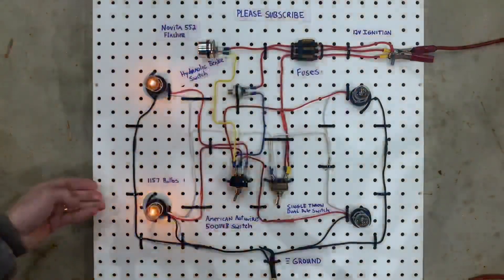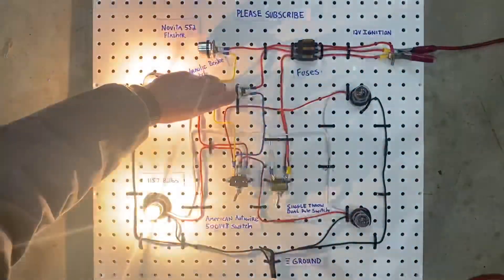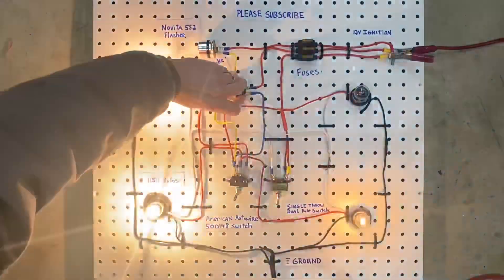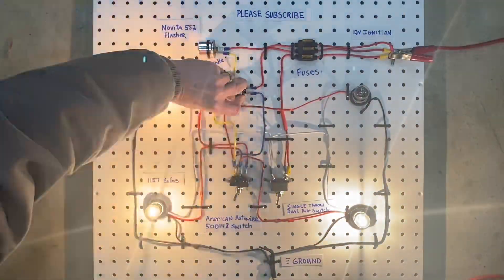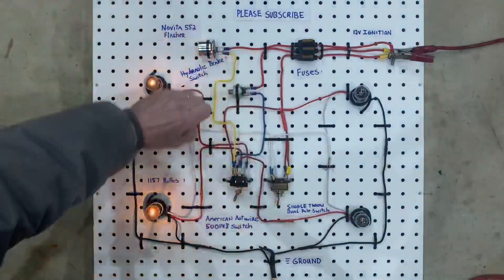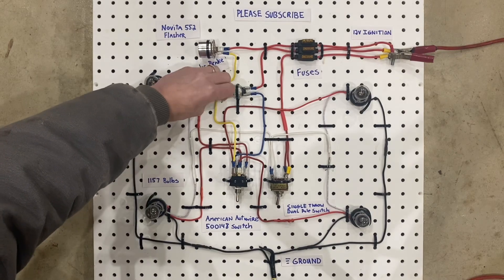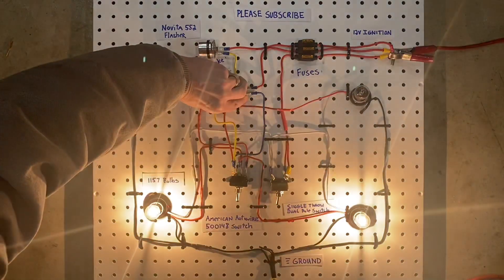And then if you switch it to the other side, you have your left directionals. And if you turn on the brakes, you have the brakes working on the right side, and the left directionals are still on. And then if you turn the directionals off, you'll get both brake lights.